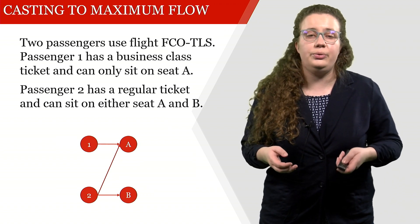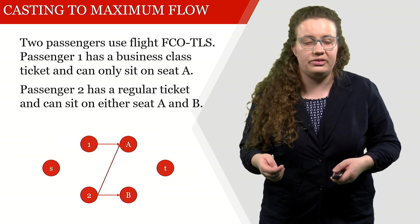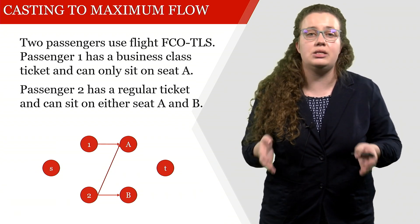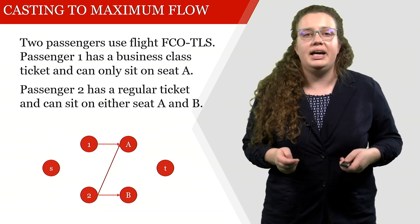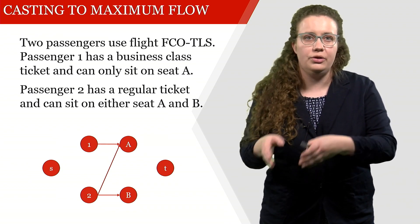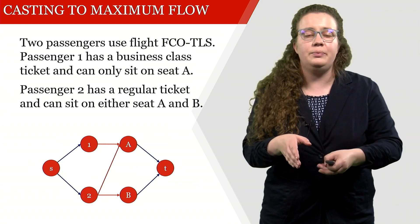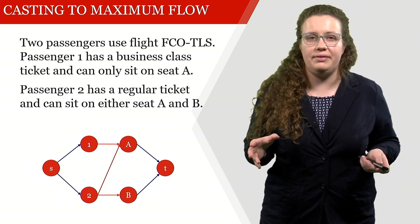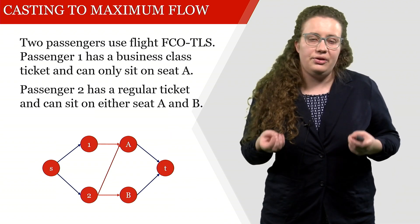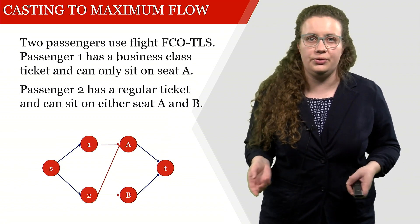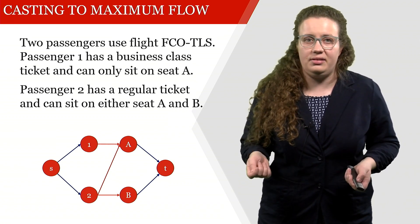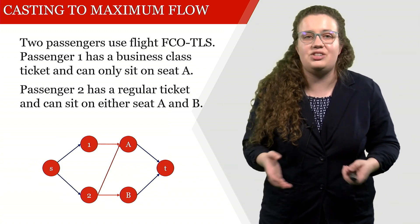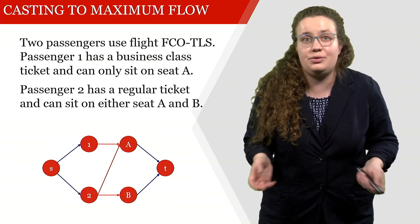The last thing we have to do is add sources and sinks. We connect the source to the passenger nodes and connect the seat nodes to the sink. To solve the maximum flow problem, for instance with the Ford-Fulkerson algorithm, we still need capacities — otherwise, how many people can sit where is difficult to answer.